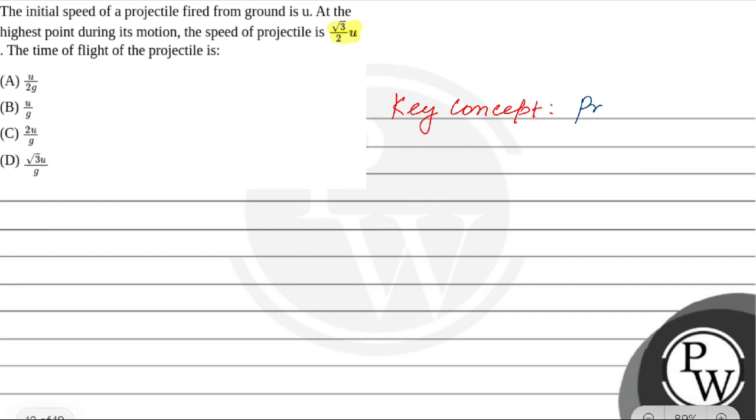We know for a projectile with velocity u at angle θ, there's a horizontal component u cos θ and vertical component u sin θ.